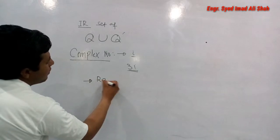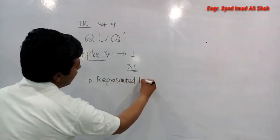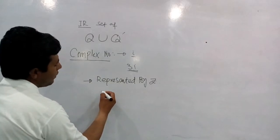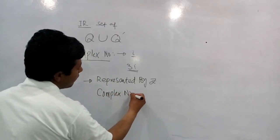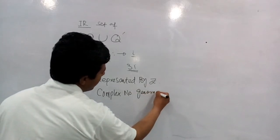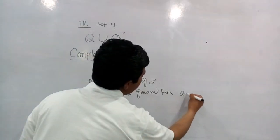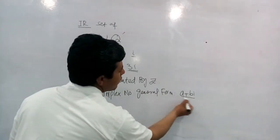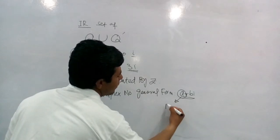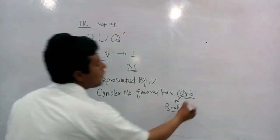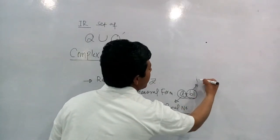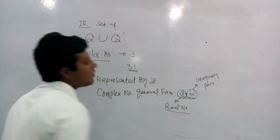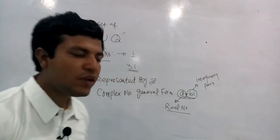Complex number کو ہم z سے represent کرتے ہیں۔ اس complex number کا general form ہے a plus b iota. اس میں جو a ہے یہ real part کو ظاہر کرتا ہے، اور جو b iota ہے اس کو imaginary part کہتے ہیں۔ So real part plus imaginary part - یہ complex number کا general form ہے: a plus b iota.